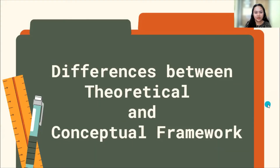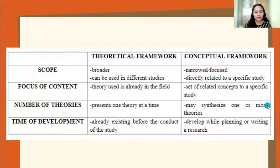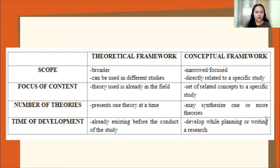The differences between the two are divided into four: scope, focus of content, number of theories, and time of development. For theoretical framework, the scope is broader and it uses different theories from different studies.